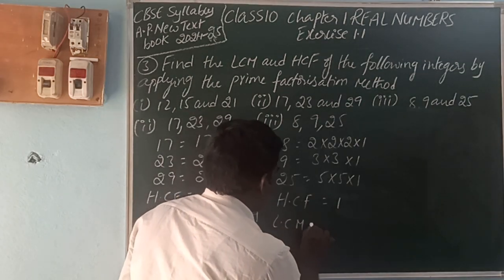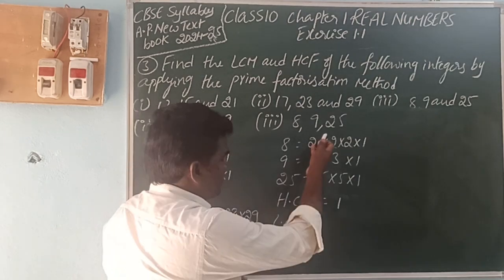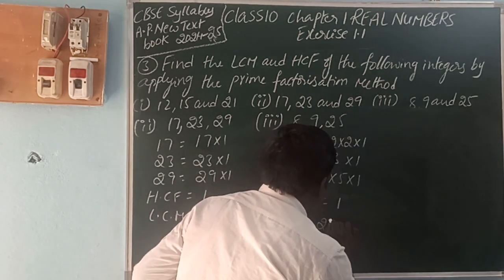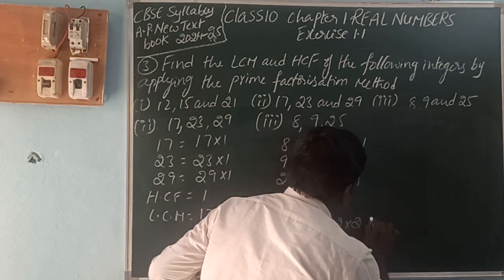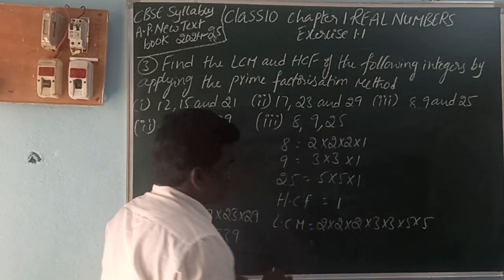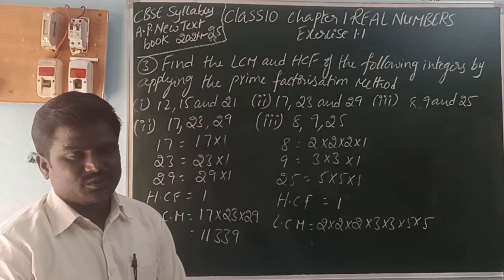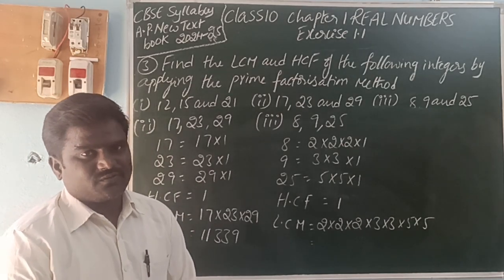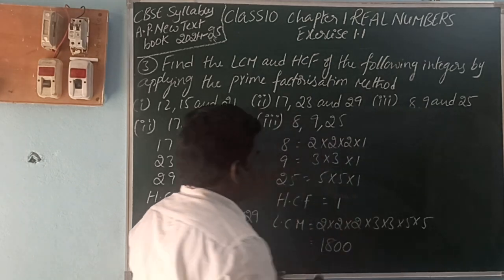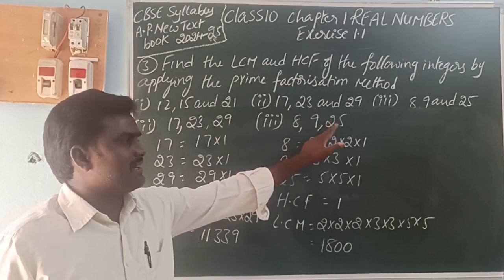For LCM, we take the highest multiple of all prime factors: 2 into 2 into 2 into 3 into 3 into 5 into 5 = 8 into 9 into 25 = 1800. So LCM is 1800 and HCF is 1 for the numbers 8, 9, and 25.